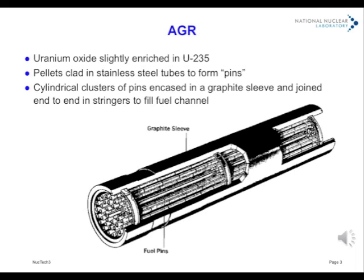Operating at higher temperatures, the AGR uses oxide fuel — a poorer conductor of heat and therefore contained in tubes of smaller diameter, this time of stainless steel, as pins filled with cylindrical pellets. Cylindrical clusters of these are arranged within a graphite sleeve that serves as a renewable portion of the moderator, and fastened end to end as stringers to fill the channel housing them.